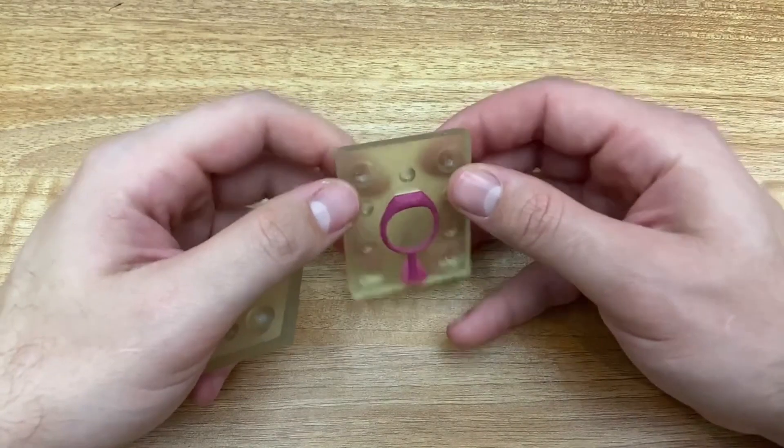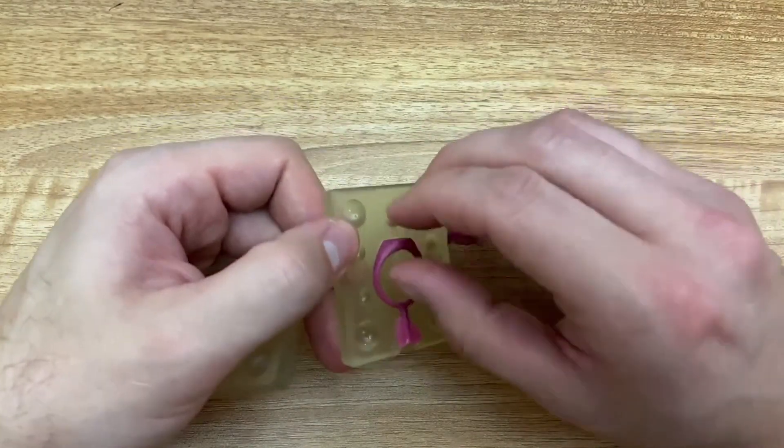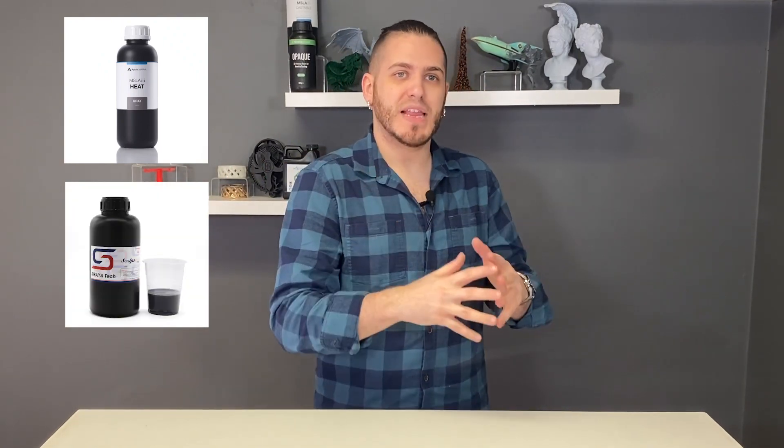We reached out to Apply Labs and they sent us some more resins that were, well, a better choice frankly for doing this type of project. For example, Heat as compared to Sculpt has a much higher heat resistance, and the Apply Labs Spring, the rubber flexible material that they sent, was a lot better than Tenacious, but stay tuned for that video because we won't be doing that today.